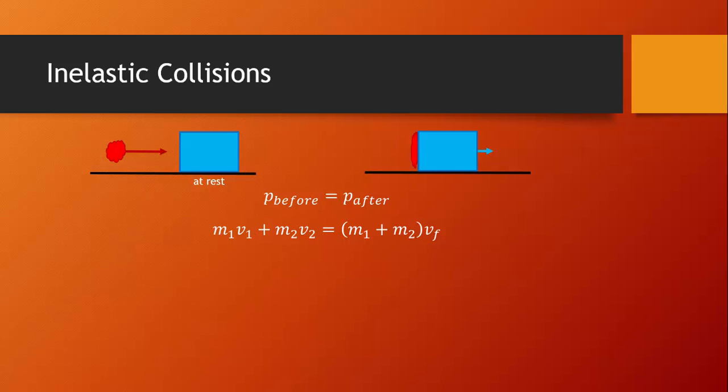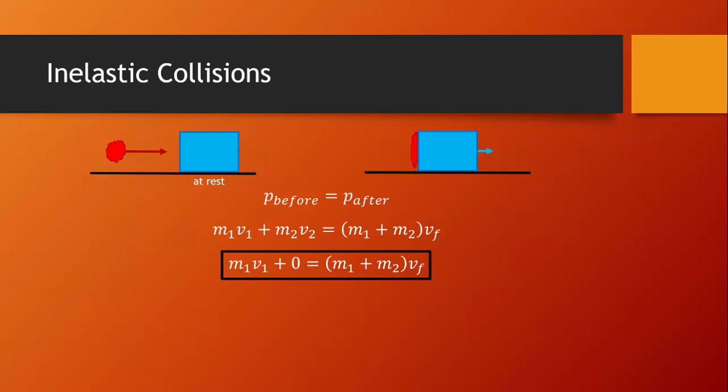Before we plug things in, let's note that the block is at rest — its velocity is zero. That means m2v2, whatever the mass is times zero, is zero. That's almost always going to be the case with inelastic collisions: a moving object collides with a stationary object, and then those two objects move off together at some speed. This will be our general equation for inelastic collisions.